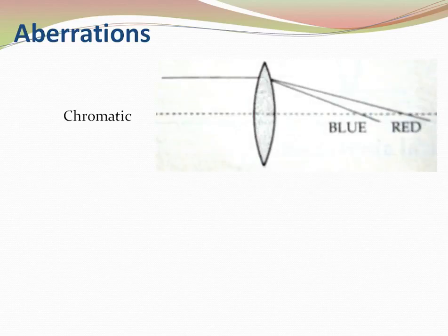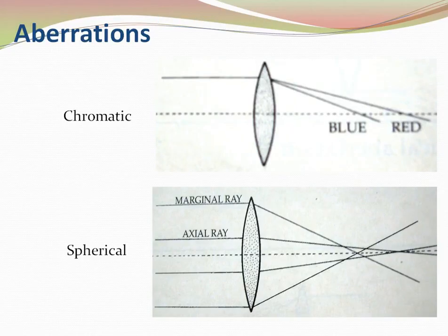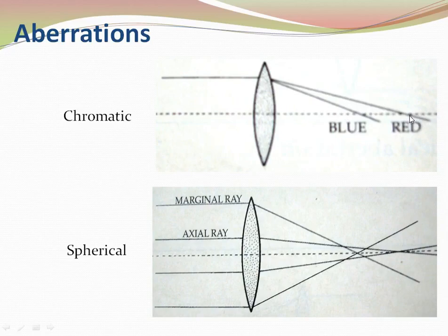There are two types of aberrations: chromatic and spherical. In chromatic aberration, when we use white light — which is a combination of different colors from blue to red — and pass it through a biconvex lens, the blue wavelengths converge more than the red. So the whole light focuses on a plane rather than a point, and a rainbow of colors is created. That is chromatic aberration.